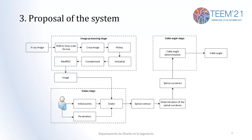Our proposal is that starting from an X-ray image, we will make some pre-processing over the image in order to make it easier for the snake stage to attain the contour. We will obtain a pre-processed image that will be given to the snake, and the snake, taking into account the initial points given by the user and some configuration, will determine the spinal contour. That spinal contour will be used to determine the spinal curvature, and finally trigonometric functions will be applied to determine the Cobb Angle.